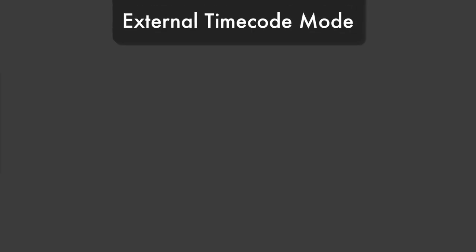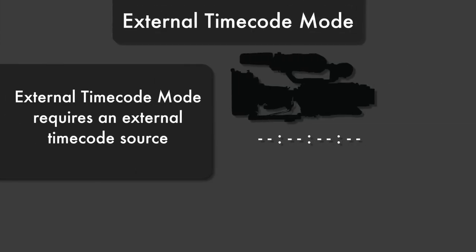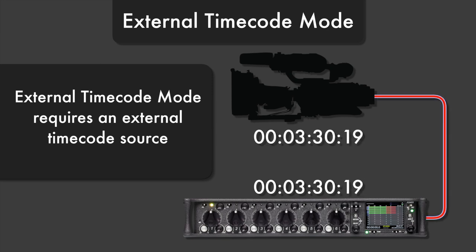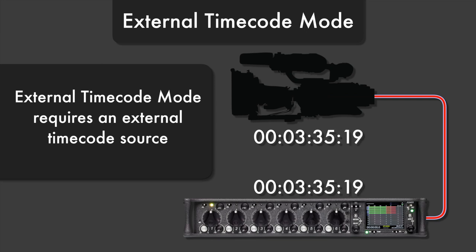External timecode mode requires an external timecode source. This mode can be used to bypass lower quality internal timecode circuitry and replace its timecode signal with one generated by higher precision timecode hardware.